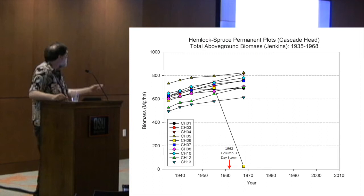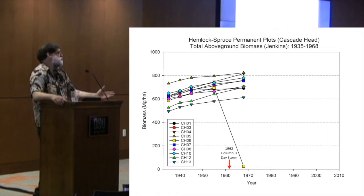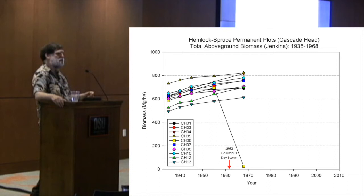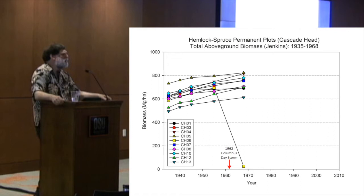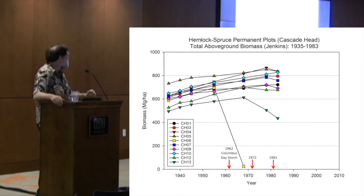Many of the plots kept chugging along, but plot number six was blown down in the Columbus Day storm and was subsequently salvaged. We think there probably were a number of live trees still in there. This was viewed as kind of a tragedy. The Columbus Day storm knocked down a lot of forests in the Northwest — it was amazing more of them weren't damaged. This was just normal attrition as time went on.